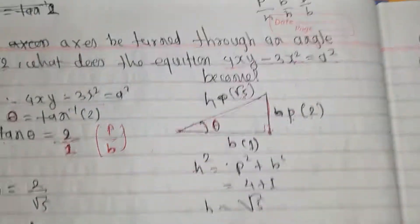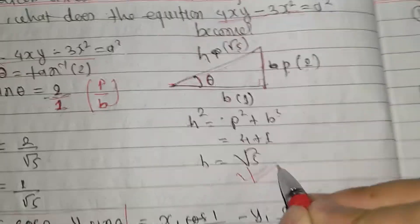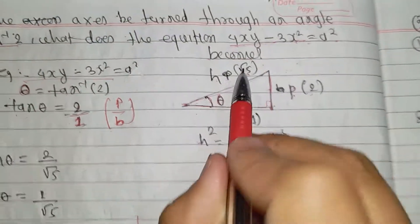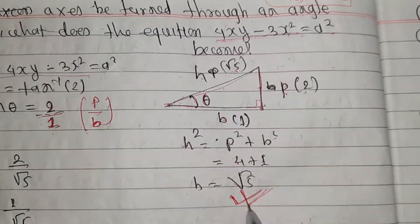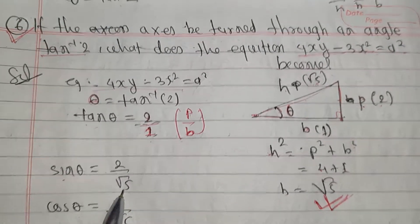So we will take 4 plus 1 to get root 5. h equals root 5. Sin equals 2 by root 5.